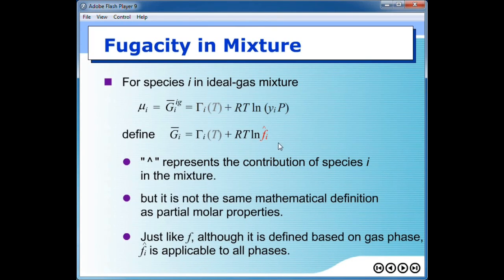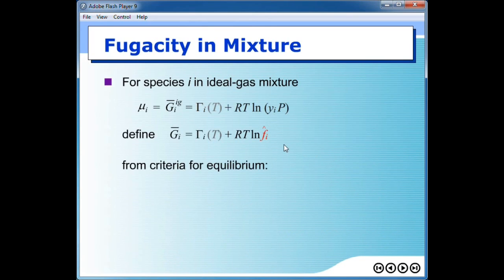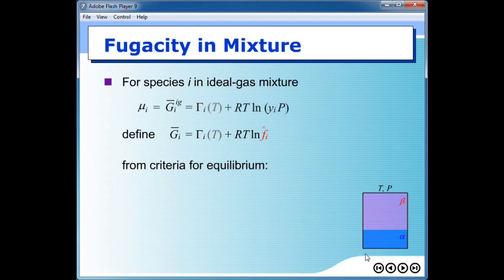Once we define fugacity for the mixture, this is very similar to fugacity of the pure component in the sense that from its definition, fugacity is defined based on gas, but its utilization can be applied to any form, including phase equilibrium. Here we discuss the criteria for equilibrium: if you have a system containing two phases — alpha phase and beta phase — these two are in equilibrium, and therefore temperature and pressure of these two phases are the same.